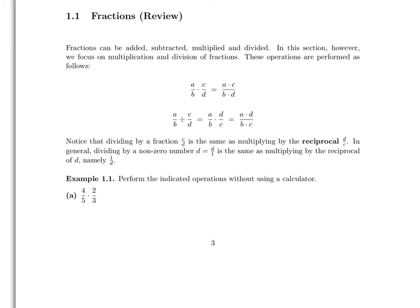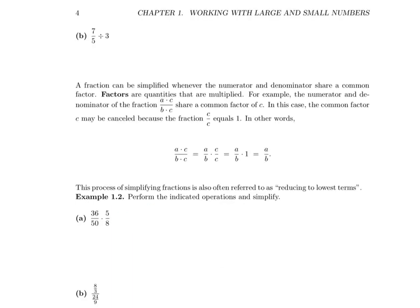Let's go ahead and work part A. In part A, we're multiplying these two fractions together, so we simply multiply the numerators of the fractions — we arrive at 8 — and we multiply the denominators of these two fractions, and we arrive at 15. Now let's do part B. We're dividing 7 fifths by 3. To work this problem, we need to think of 3 as a fraction, so we're taking 7 fifths and dividing it by the fraction 3 over 1. Dividing by 3 over 1 is the same thing as multiplying by the reciprocal one-third. When we perform the multiplication, we find we get 7 divided by 15.